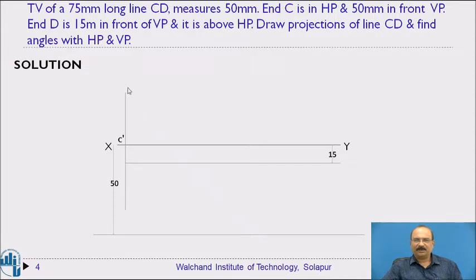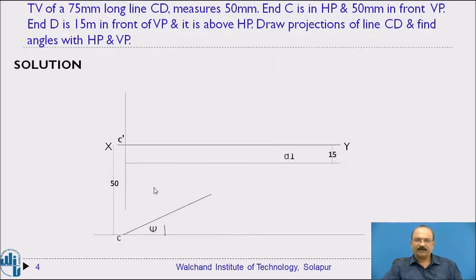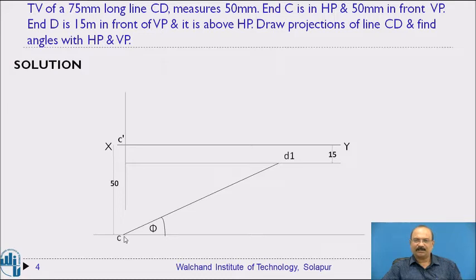An important aspect of this problem is that no angle has been given — only the dimensions of the line lengths are given: the top view length as well as the true length. Based on this, we locate point C. After locating C, since C dash has already been placed, the projection of C dash gives us the C point on the top view.